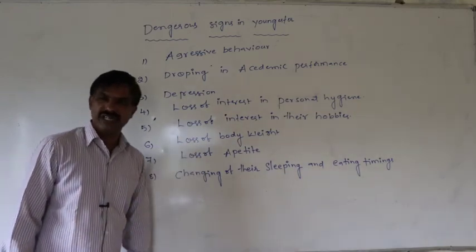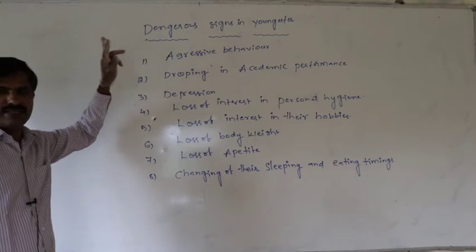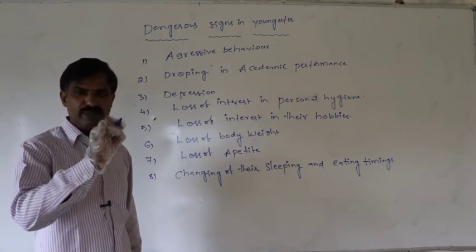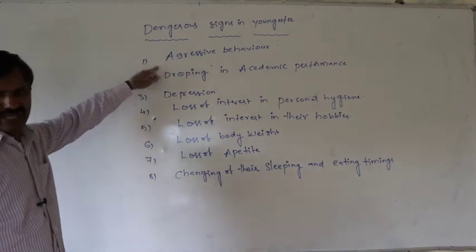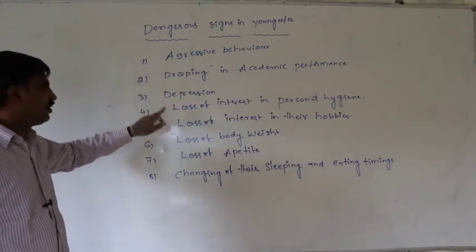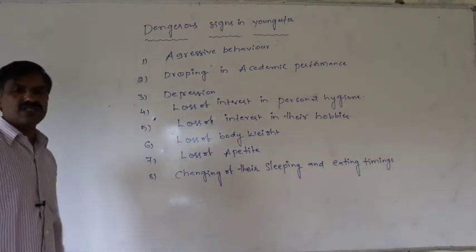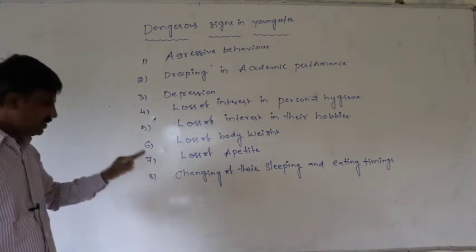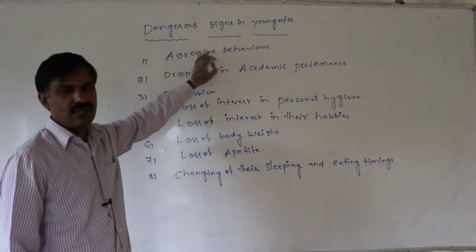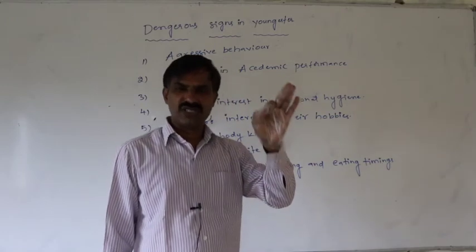By that way they lose their hunger, that is the loss of appetite, and body weight gradually decreases. So, the dangerous signs or symptoms which may appear in adolescents attracted towards TDA abuse are: one — aggressive behavior, two — dropping in academic performance, three — depression, four — loss of interest in personal hygiene, five — loss of interest in hobbies, six — loss of body weight, seven — loss of appetite, eight — changing of sleeping and eating timings. By observing these abnormal signs we can easily suspect a child may be attracted towards TDA abuse.